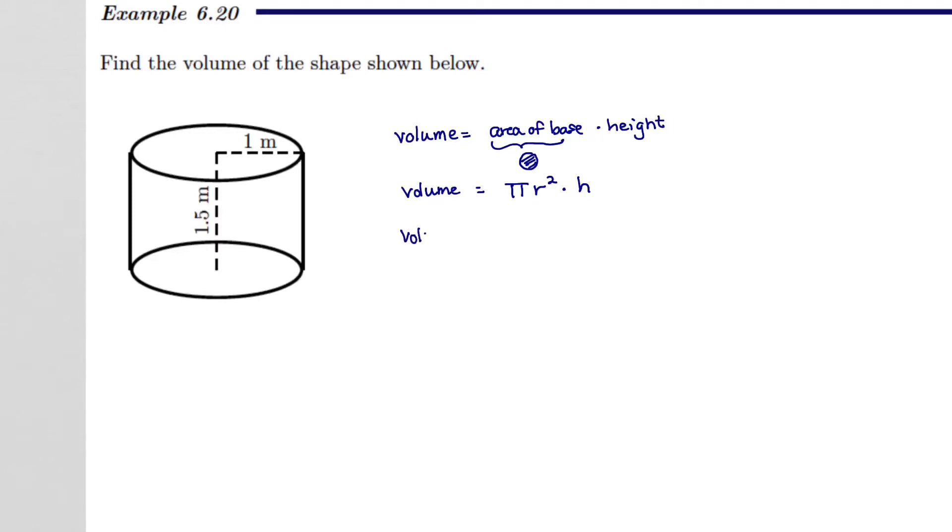The volume of the cylinder is going to be pi times the radius squared. Well, let's see. What is the radius? The radius of the base is just 1 meter.